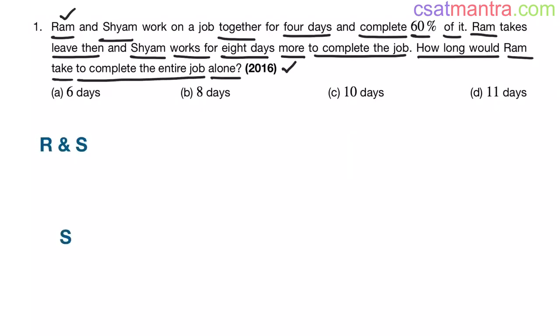See, Ram and Shyam work on a job together for 4 days and complete 60% of it. They have completed 60% of the work. Now, how much is remaining? 40%. Ram left the job.